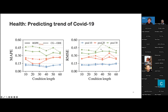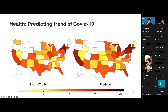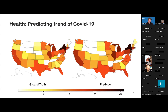We have also applied our model to predict the trend of COVID-19. Our model always achieved less predictive error compared with the baselines in different settings, which validates the effectiveness of our method. We also conduct some visualization of our prediction, and you can see that our prediction is very close to the ground truth.